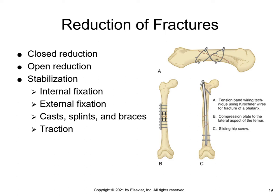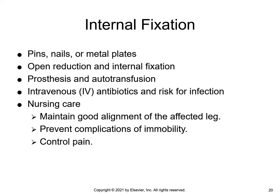A closed reduction is when the bone is manipulated into alignment with no incision made; a general anesthesia will be given before the fracture is reduced. An open reduction is done after a surgical incision is made through the skin and down to the bone at the site of the fracture. In cases of open, compound, or comminuted fractures, an open reduction is necessary so the area can be adequately cleansed and bone fragments removed. The physician stabilizes the bone with pins, screws, nails, and metal plates.